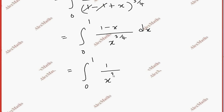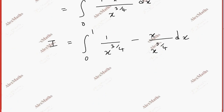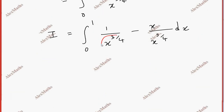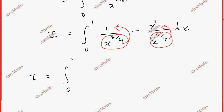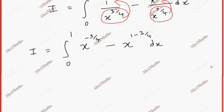So (1 minus x) power 3 by 4 dx. After simplification: 2I equals integral 0 to 1, x to the power (minus 3 by 4) minus x to the power (1 minus 3 by 4), that is 1 minus 3 by 4.